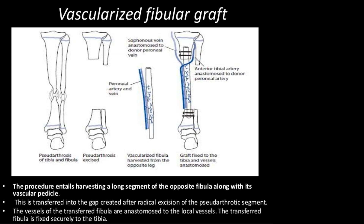In vascularized fibular graft transfer, a long segment of the contralateral fibula along its vascular pedicle is harvested and transferred into the gap created after radical excision of the pseudarthrosis segment. The vessels of the transferred fibula are anastomosed to local vessels, and the transferred fibula is fixed securely to the tibia, usually with screws or pins.